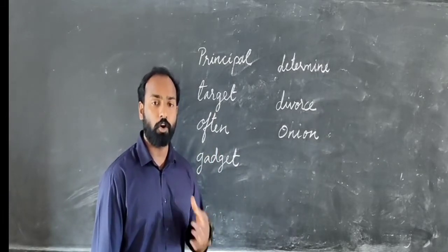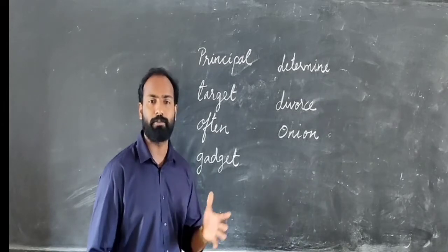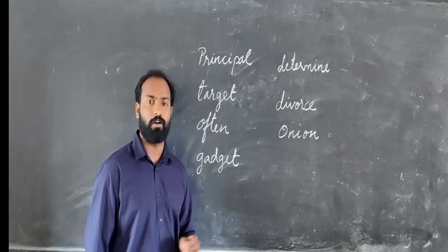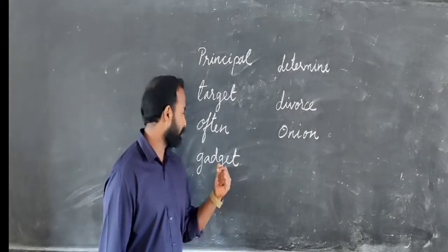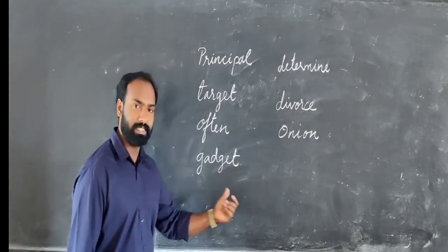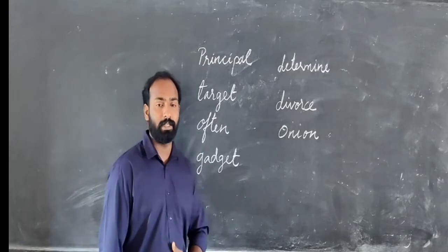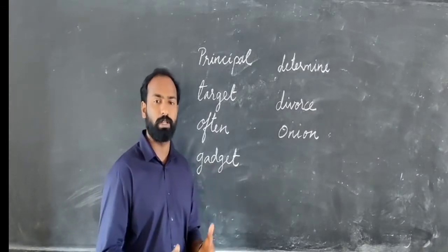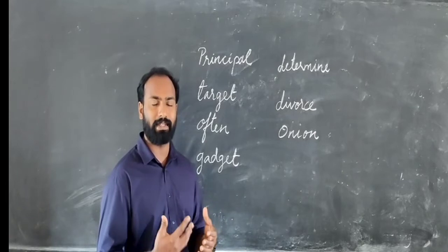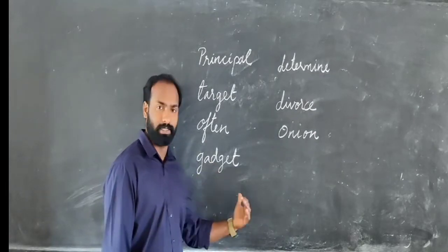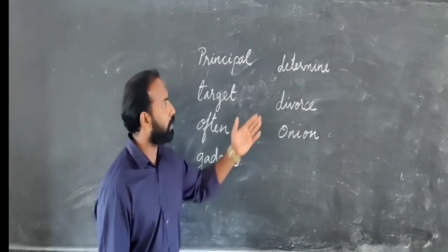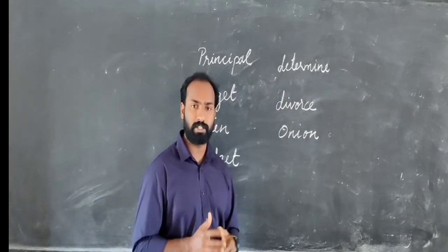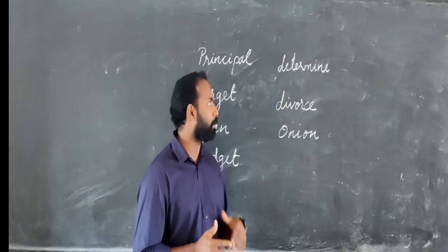The next word: not 'often' — some of you read it as 'often' but it is pronounced 'often.' Then there is 'gadget' — the new mechanical device that you use — it is 'gadget,' not 'gad-get.' And then 'determine' — it is not 'determine' in the American pronunciation, but the British pronunciation is 'determine.'